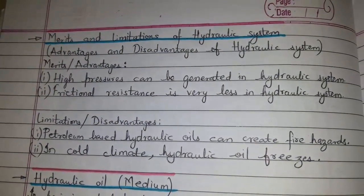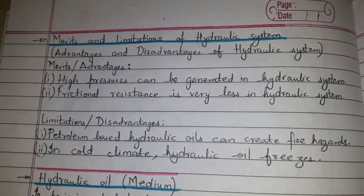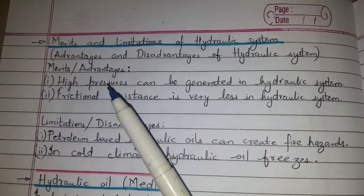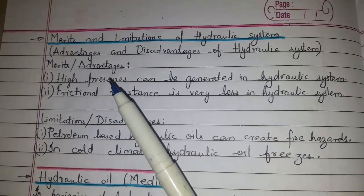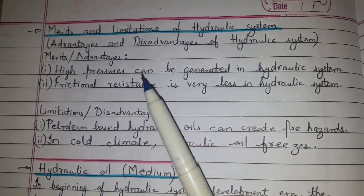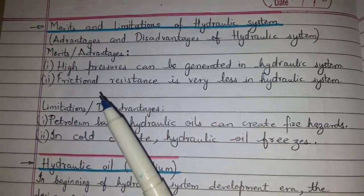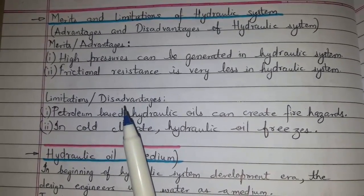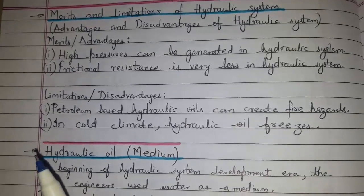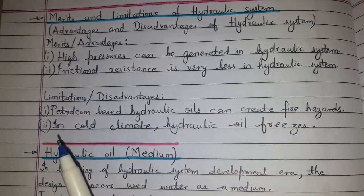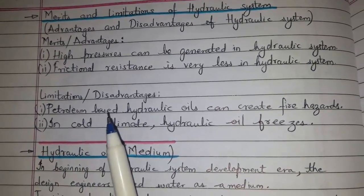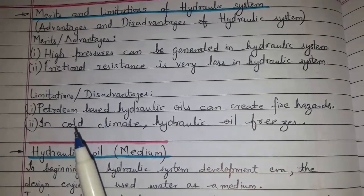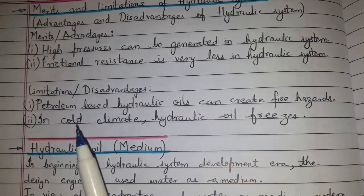Regarding merits and limitations of hydraulic system, that is advantages and disadvantages of hydraulic system: there are many advantages; here I have listed few. High pressures can be generated in hydraulic system. Frictional resistance is very less in hydraulic system. Limitations or disadvantages — there are many; I have listed few. Petroleum based hydraulic oils can create fire hazards. In cold climates, hydraulic oil freezes.